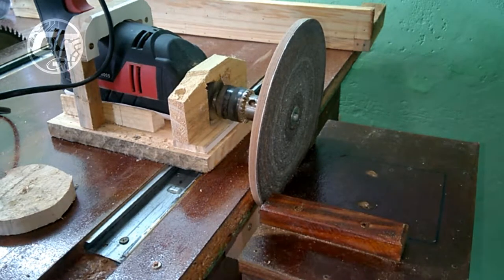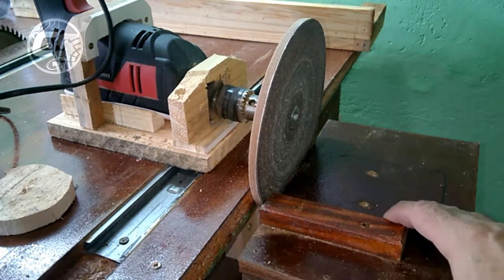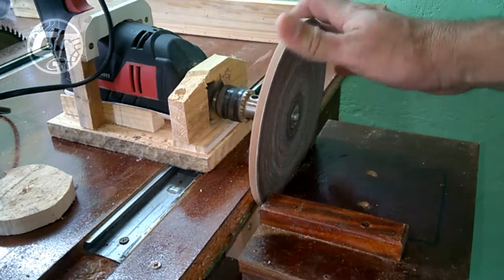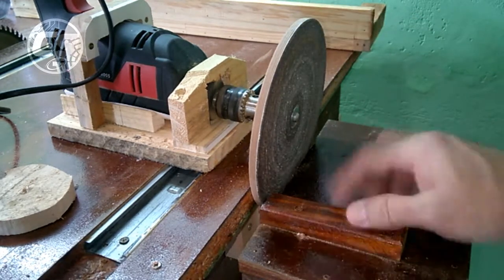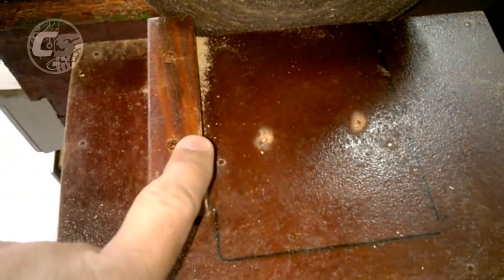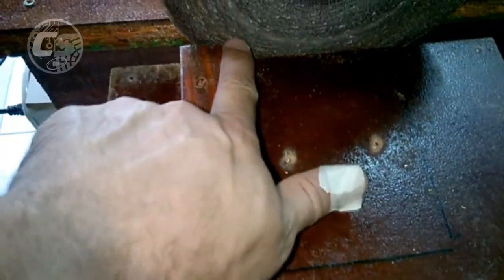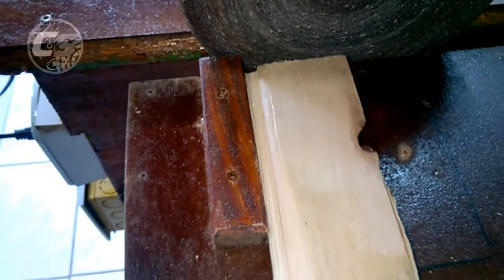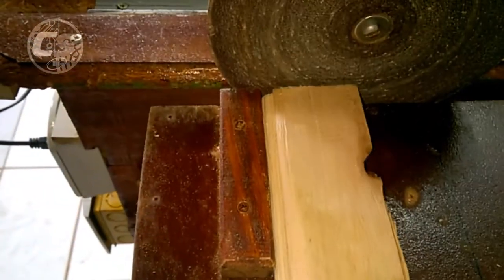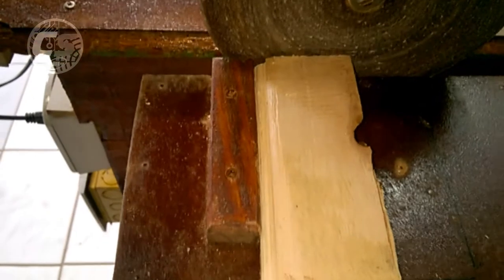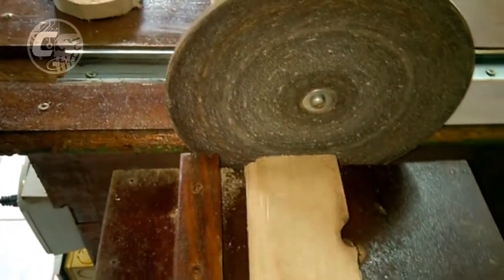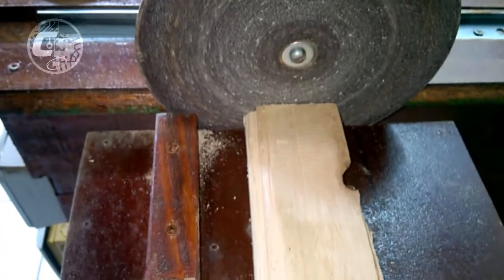I'll show you now the jigs I made for the circular sander. There's this first one—I'll put it here for you to see. It's a piece of wood attached at 90 degrees in relation to the sander, so I can do sanding and not lose the angle of the tip. Because if I try to sand like this without a guide, it might happen that the wood rotates and it will cut more on one side than the other.